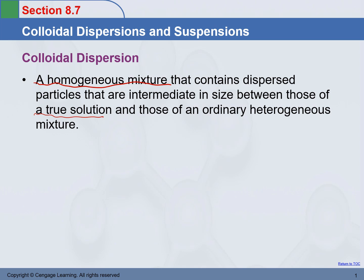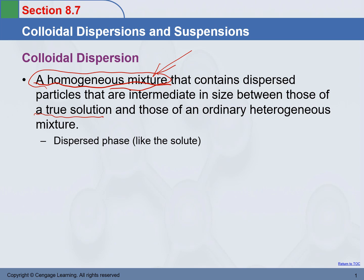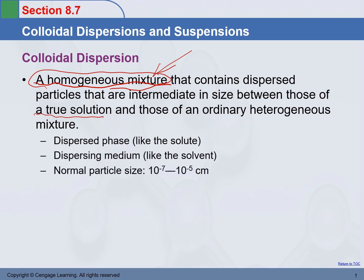If colloidal dispersion is also a homogeneous mixture, why do we need to distinguish it from a solution? Why don't we just call it a solution? Because when particle size is big enough, colloidal dispersion has some behavior different from a true solution. That's why we define it as a different system. Because it is not a solution, we cannot call the components solvent or solute. We call them dispersed phase — like the solute — and dispersing medium — like the solvent.